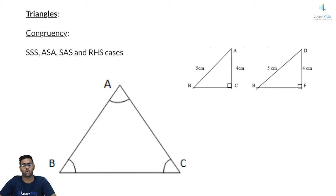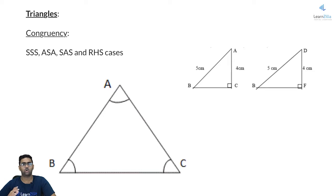Now let us move to the topic of triangles. Areas and all were already covered as part of the mensuration course. So here in geometry, we will specifically keep it to identities and congruences. When you are talking about two triangles being similar, you have four rules.